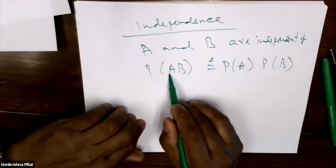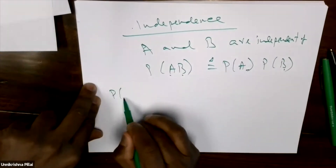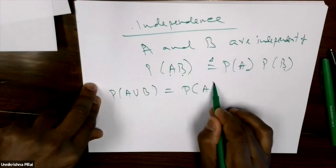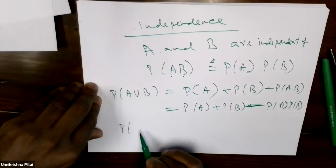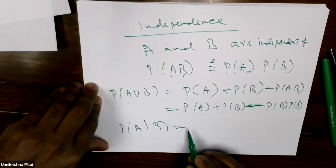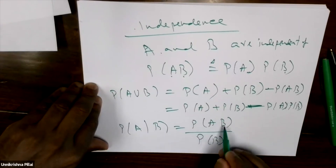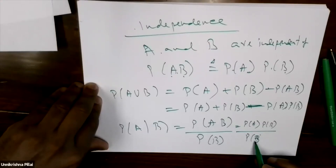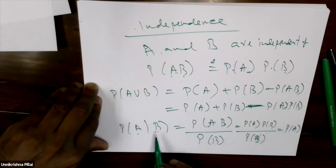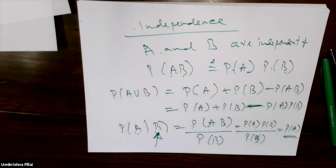Two events A and B are independent if P(A∩B) = P(A)·P(B). If A and B are independent, then P(A|B) = P(A∩B)/P(B) = P(A)·P(B)/P(B) = P(A). This means that knowing B occurred does not affect A — whether B occurs or not, the probability of A remains unchanged.